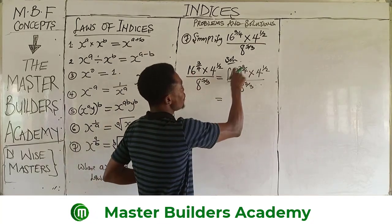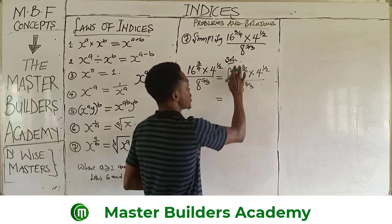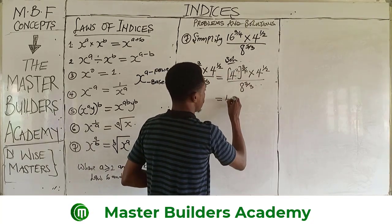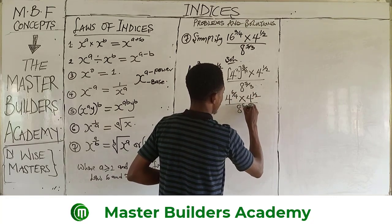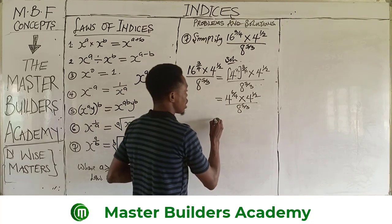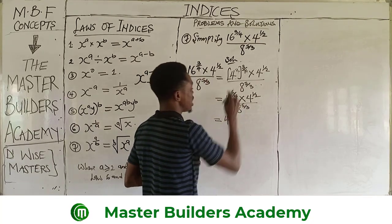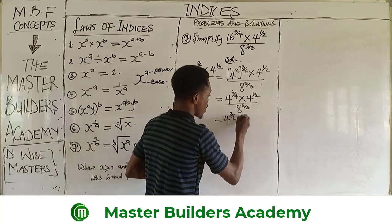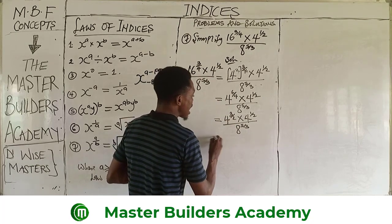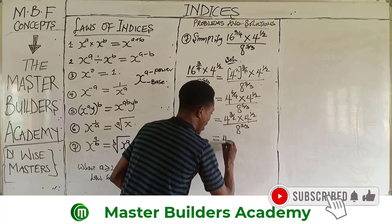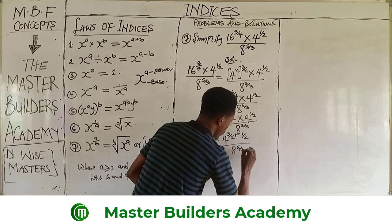I can choose to multiply out the exponent: 2 times 3 gives us 4 raised to power 6 over 4, multiplied by 4 raised to power 1 over 2, all over 8 raised to power 5 over 3. Something is common between these two terms — dividing by 2 gives 4 raised to power 3 over 2, multiplied by 4 raised to power 1 over 2, all over 8 raised to power 5 over 3. Adding the powers: 3 over 2 plus 1 over 2, all over 8 raised to power 5 over 3.